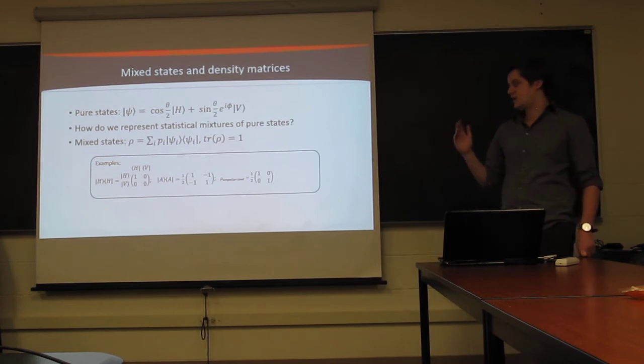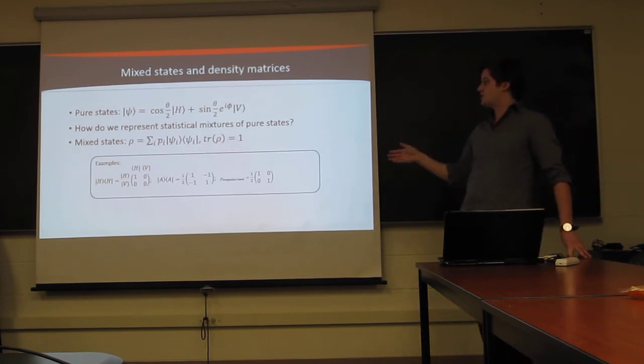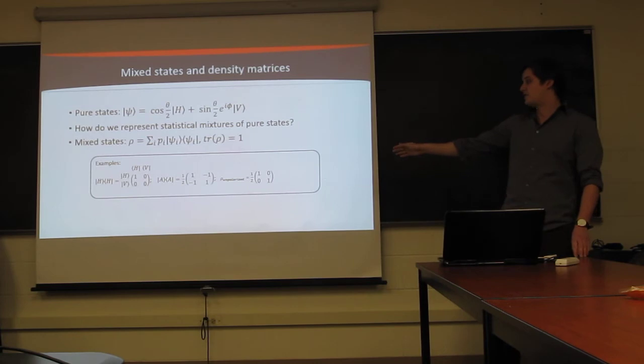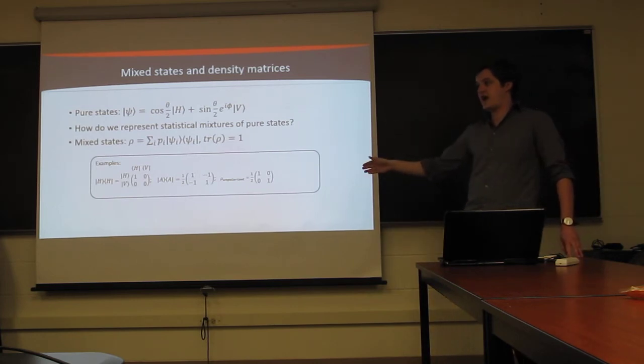But those are, again, both pure states. So, representing a mixed state, we can do something like completely unpolarized light. Light which has no coherence between the horizontal and vertical components. In which case, we just get an identity matrix, with 1/2 in both portions of the diagonal, but 0 on the off-diagonal.